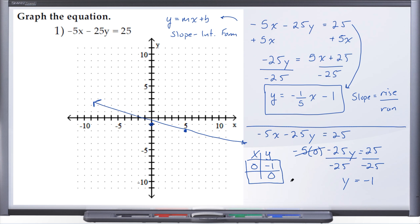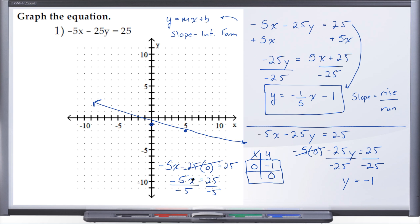To find the x-intercept, plug 0 in for y. We have negative 5x minus 25 times 0 equals 25. Negative 25 times 0 is 0, so that goes away, leaving negative 5x equals 25. Dividing both sides by negative 5 gives x equals negative 5.